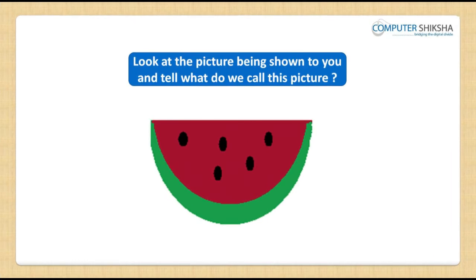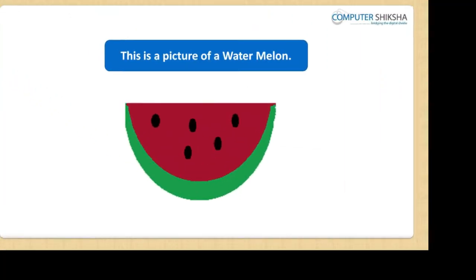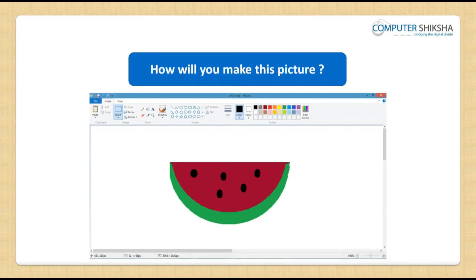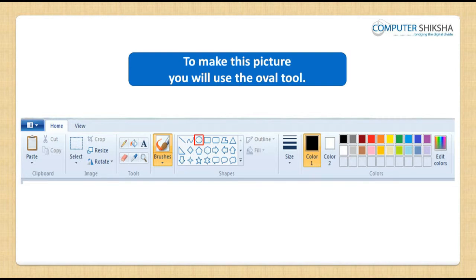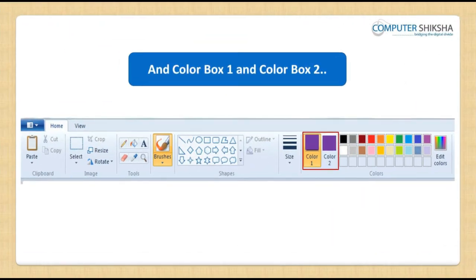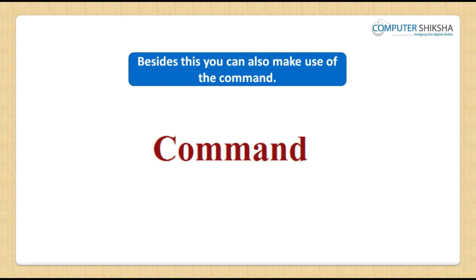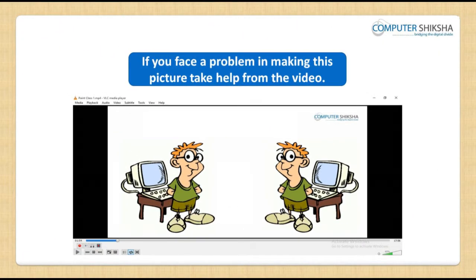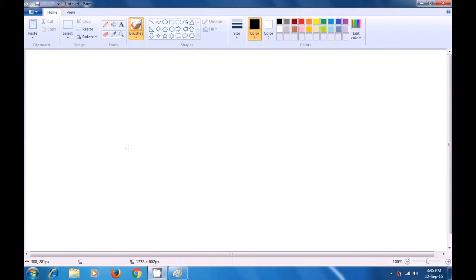Look at the picture being shown to you and tell what we call this picture. This is a picture of a watermelon. To make this picture, you will use the oval tool and color box 1 and color box 2. Besides this, you can also make use of commands. If you face a problem, take help from the video.